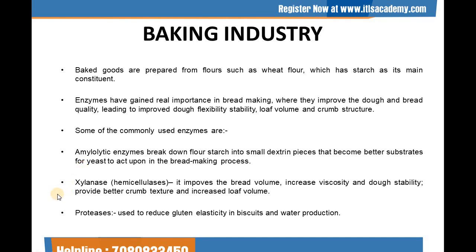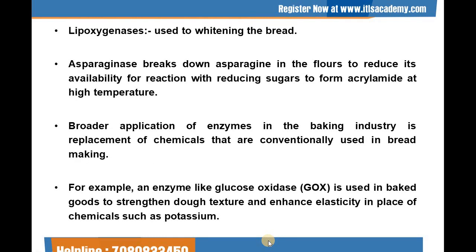Next, xylanase, also known as hemicellulase. It improves the bread volume, increases viscosity and dough stability, provides better crumb structure, texture, and increases loaf volume. Proteases are used to reduce gluten elasticity in biscuits and wafer production. Next, lipoxygenases are used to whiten the bread. Next, asparaginases break down the asparagine in flours to reduce its availability for reaction with reducing sugars to form acrylamide at high temperature.